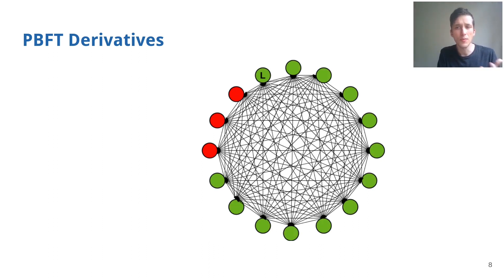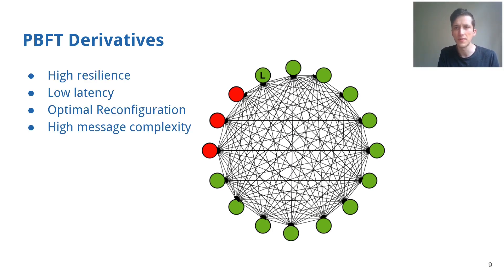As such, within an optimal number of reconfiguration steps a robust configuration is achieved and consensus can terminate. pBFT has several advantages, including high resilience, low latency and optimal reconfiguration steps. However, it suffers from high message complexity.